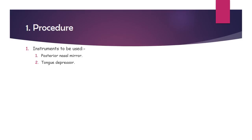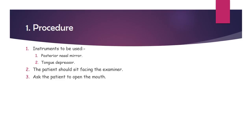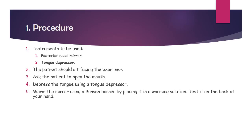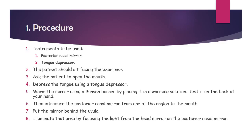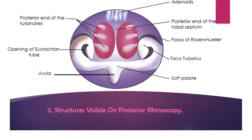Posterior rhinoscopy procedure: instruments used are a posterior nasal mirror and a tongue depressor. The patient sits facing the examiner. Ask the patient to open the mouth and depress the tongue using the tongue depressor. Warm the mirror using a Bunsen burner or warming solution, test it on the back of your hand, then introduce the posterior nasal mirror from one angle of the mouth and place it behind the uvula. Illuminate the area by focusing light from the head mirror onto the posterior nasal mirror.